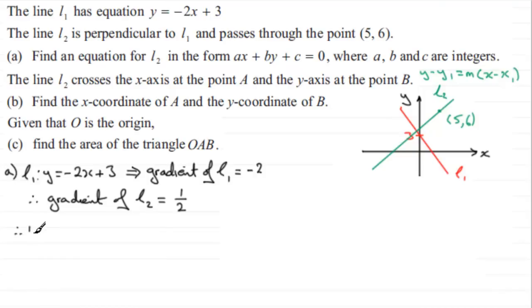Now that means that we're in a position then to get the equation of L2. Therefore the equation of L2 is y minus y1, so y1 is the 6, equals m the gradient which we've seen is a half, multiplied by x minus x1, x1 being the 5.